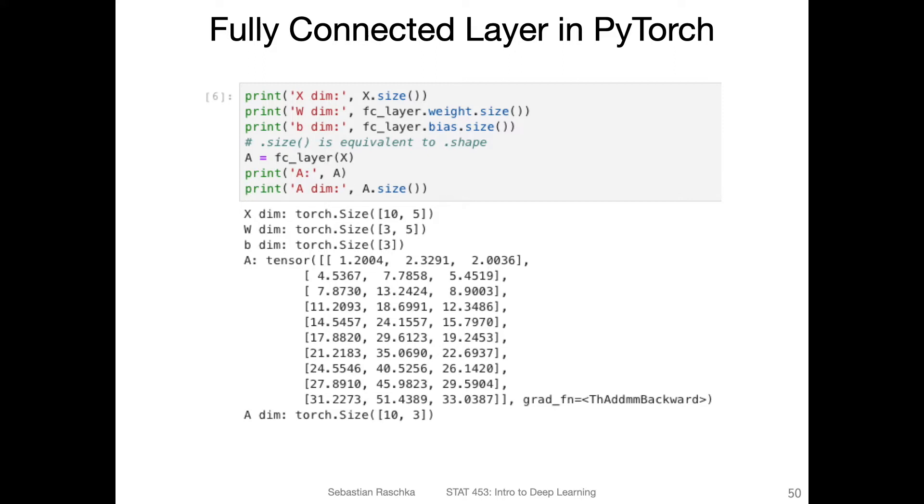Now I'm printing the dimensions for the input, the weight, the bias. It's 10 by 5, 3 by 5, and 3.